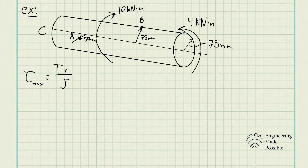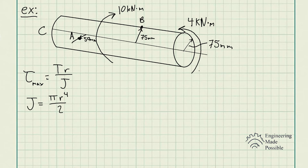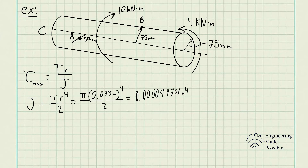Here is our maximum shear stress formula: torque times the radius divided by the polar moment of inertia. First, we solve for the polar moment of inertia — you can always find the equations in a table at the back of the book. The polar moment of inertia J equals π times radius to the 4th power divided by 2, giving us a small value in meters to the 4th power. The millimeters have been converted to meters to keep units consistent.